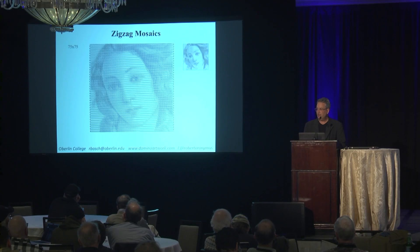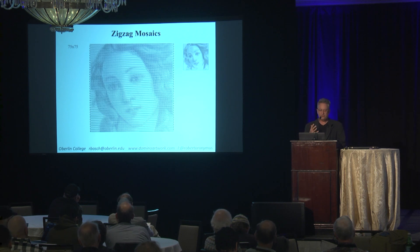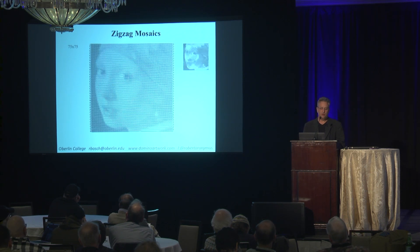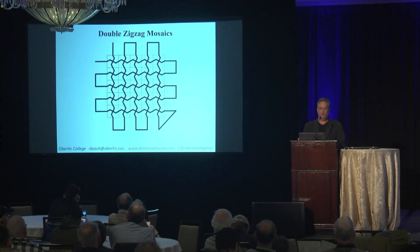Here's an example based on a 75 by 75 low-resolution rendition of a portion of Botticelli's Venus, presented both up close and from a distance. Here's one based on Leonardo's Mona Lisa. Here's one based on Vermeer's Girl with a Pearl Earring. Now there's more — we can do double zigzag mosaics.